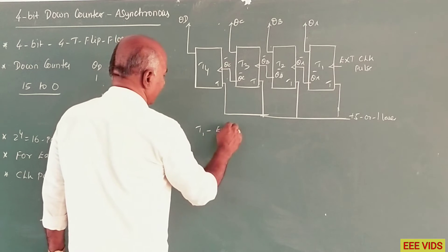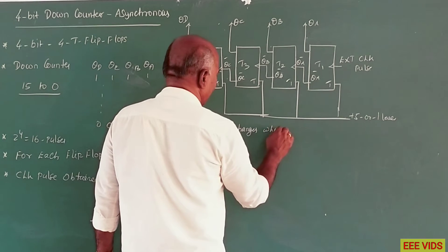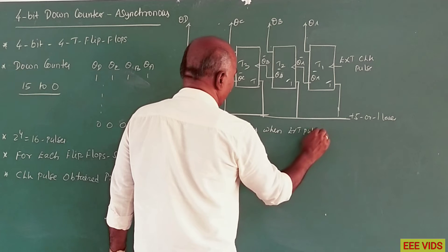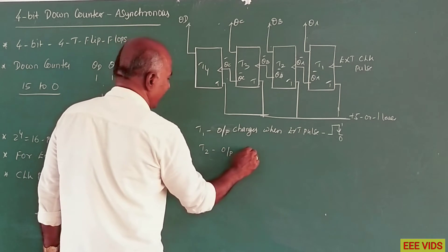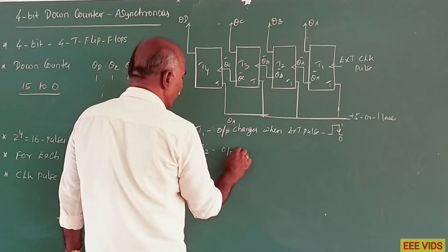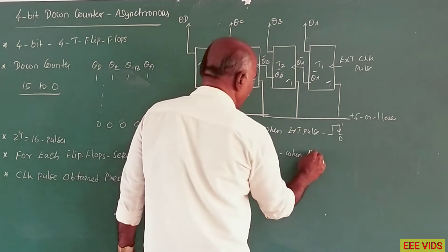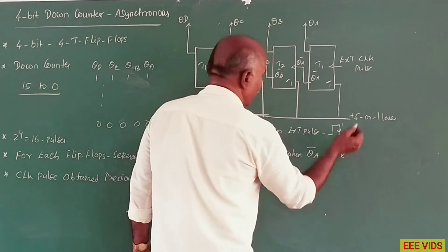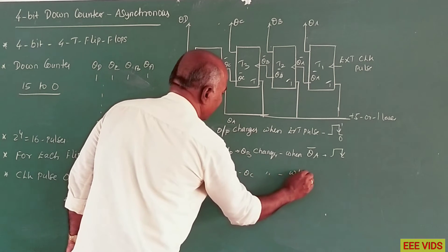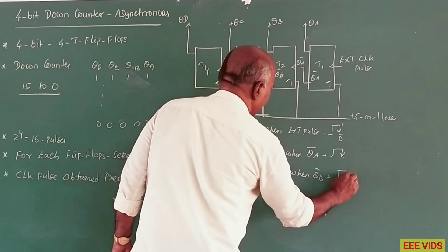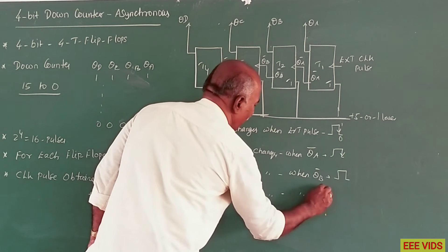So the external clock pulse is applied to T1. T1 output QA changes when the external clock pulse goes from 1 to 0 (negative edge). T2 output QB changes when QA goes 1 to 0. T3 output QC changes when QB bar goes 1 to 0. T4 output QD changes when QC bar goes 1 to 0.